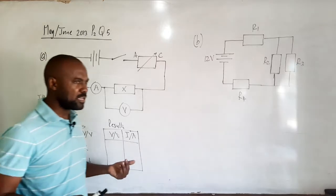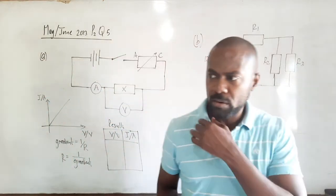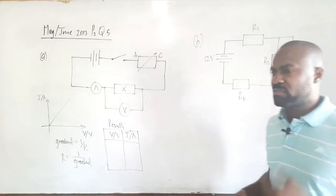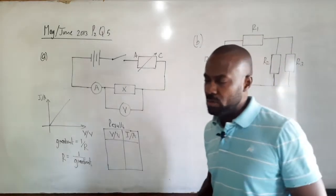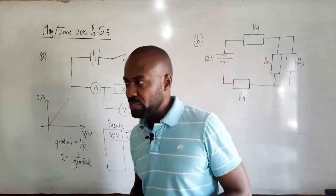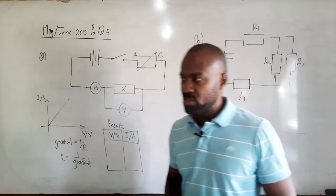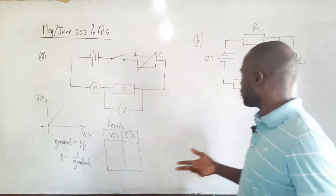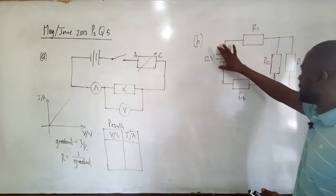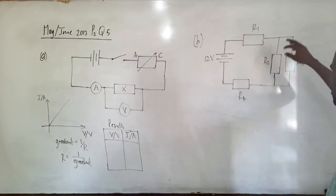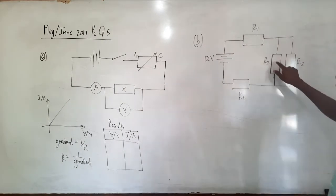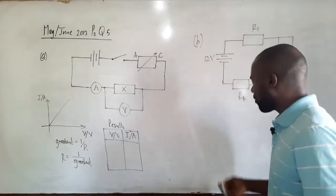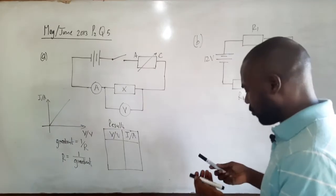Now let's look at Part B. Part B says that Figure 2 shows a 12-volt battery connected to an arrangement of resistors. We have a 12-volt battery and four resistors connected in the circuit: R1, R2, R3, and R4. Our battery will be driving a current — let's call it I — which will flow through R1.